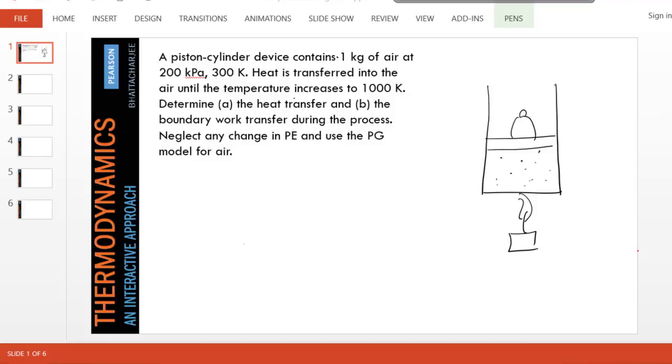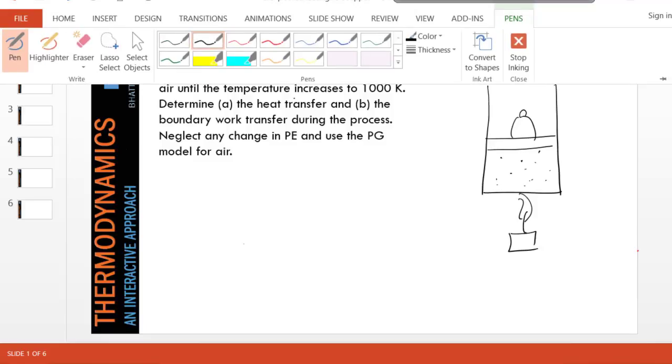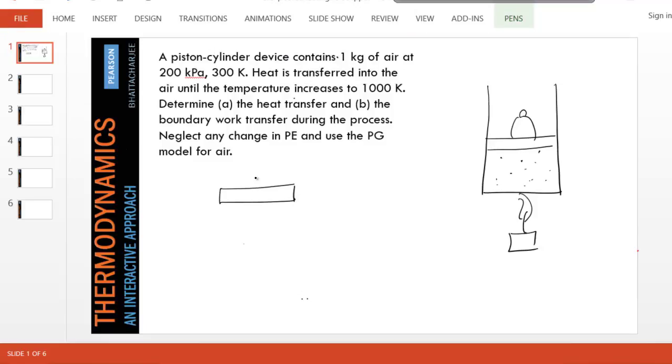You can understand the pressure doesn't change because if you draw a free body diagram of the piston, you can see we have the force of the weight on top and atmospheric pressure pushing it down, and the gas from inside pushing it up. Even though the piston moves because of heating, it is not accelerating, so there is no net force on the piston.